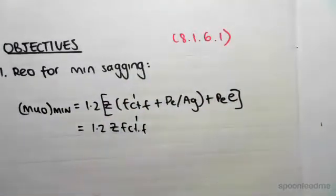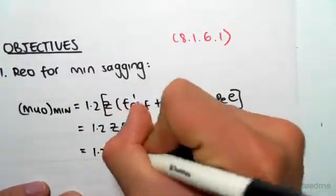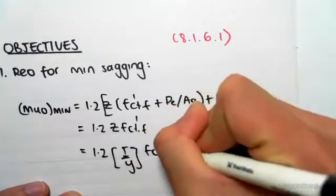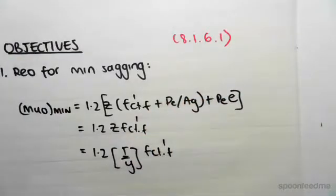Now, Z is the section modulus. So the section modulus is I/Y and FCT.f'. So we're going to go ahead and find all these values.